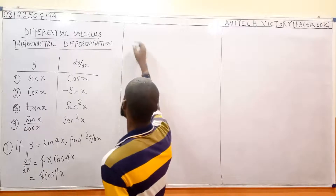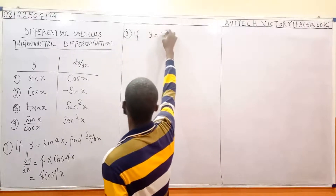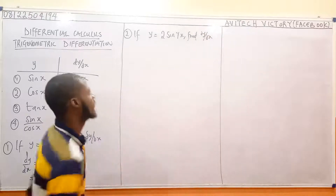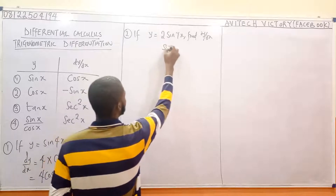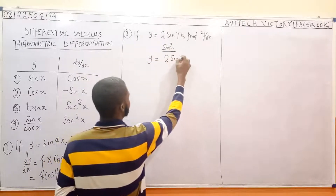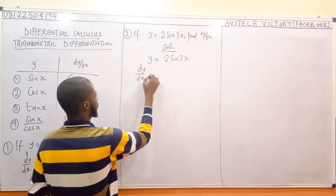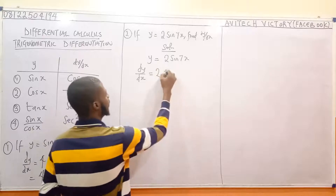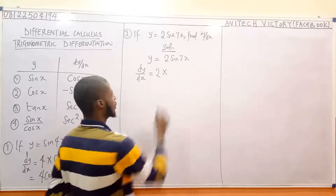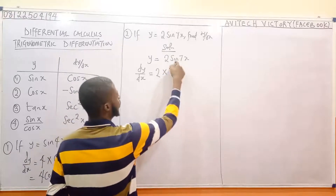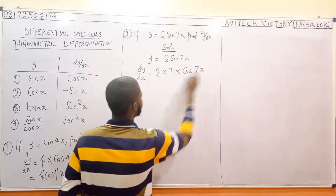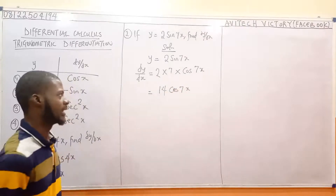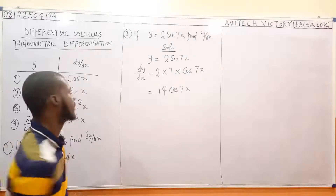Number 2: if y equals 2sin(7x), find dy/dx. The 2 is a constant, so write it first. Differentiate 7x to get 7. Differentiate sin to get cos. Put the angle back: 7x. So the final result is 14cos(7x). Quite simple — the same principle applies.